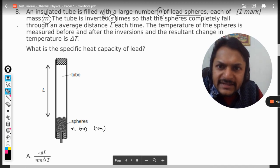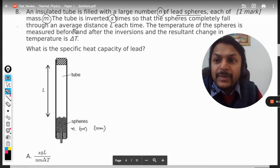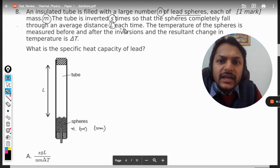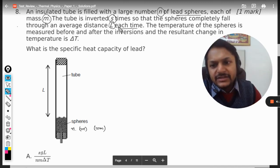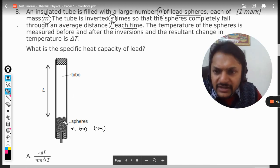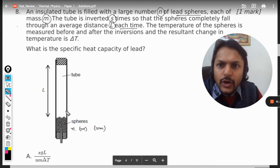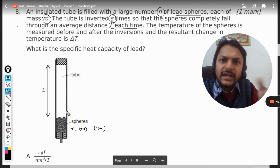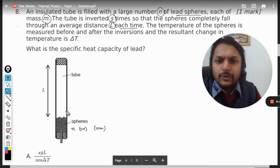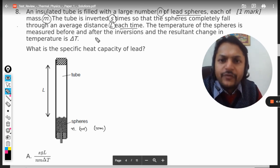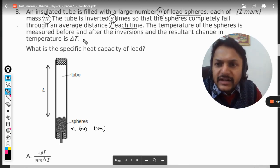Now the tube is inverted s times so that the spheres completely fall through an average distance of l each time. So it's done like this, and each time all the spheres travel the distance l. S times they have inverted - like one, two, three, four - so each time is calculated. The temperature of the sphere is measured before and after the inversions. The resultant change in temperature is delta t. What is the specific heat capacity of the lead?